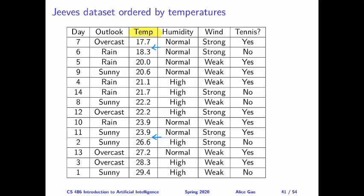How do we decide? On one side we have 23.9, on the other side we have 26.6. On either side, we take all of the data points that have that feature value and look at all of their labels. For 23.9, we have two labels: yes and yes. For 26.6, we have one label: no. In the steps, I refer to these as LX and LY. So LX, the set of labels for X, contains yes and yes, and LY contains no.